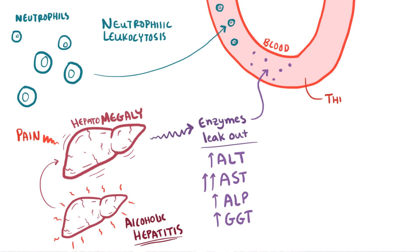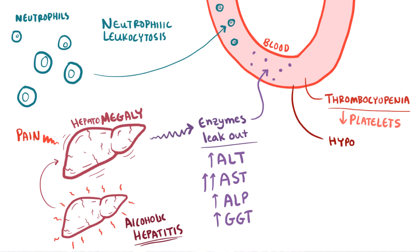In some cases, thrombocytopenia — a deficiency of platelets in the blood — as well as possible hypoglycemia, or low blood sugar, can also be found in the blood of someone with alcoholic liver disease.